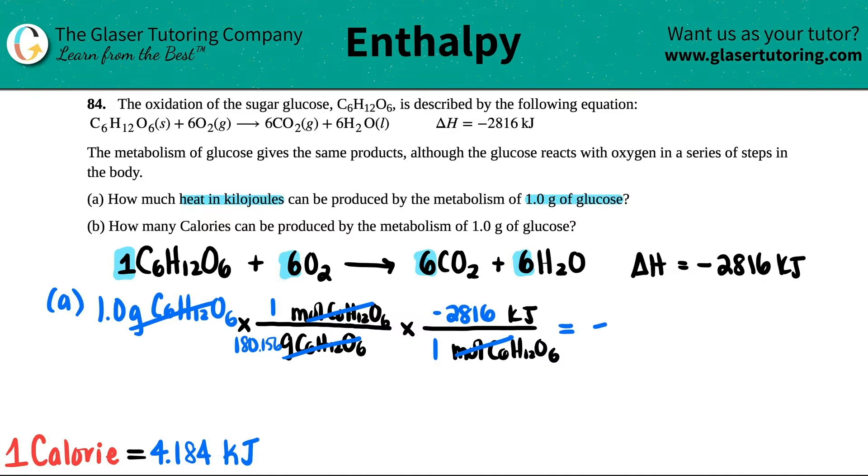So basically, you're going to release, the negative is the release, right, 15. And actually, this is, technically we should have 2 sig figs because it's 1.0 grams of glucose, so maybe I'll just say 16. It's 15.6, but the 6 rounds up, so this would be 16 kilojoules.